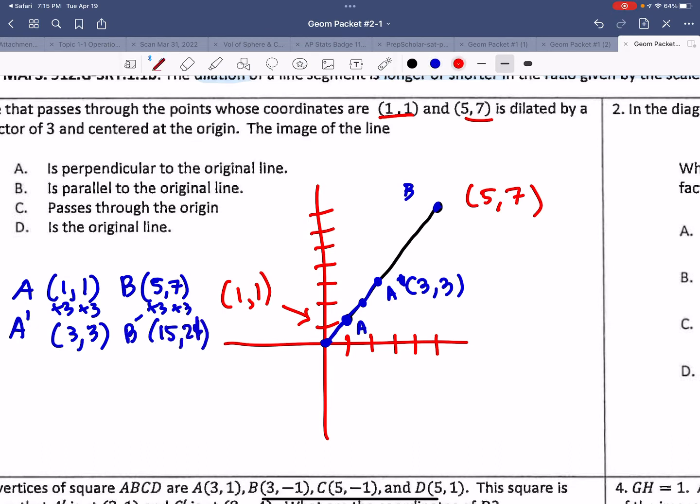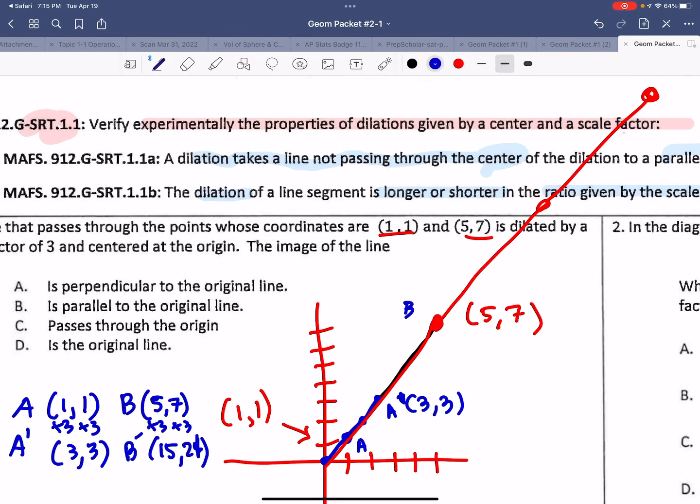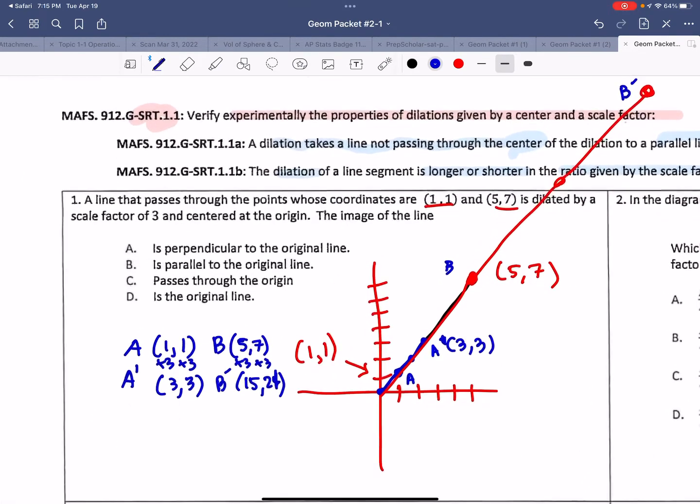So this would be where the dot is. 1, 2, 3. I almost fall off the page. This is where B prime is. (15,21). So what can we say about what we've just drawn? It says the image of the line, the new line. Okay. So my new line, A prime to B prime. And where's my old line? A to B.